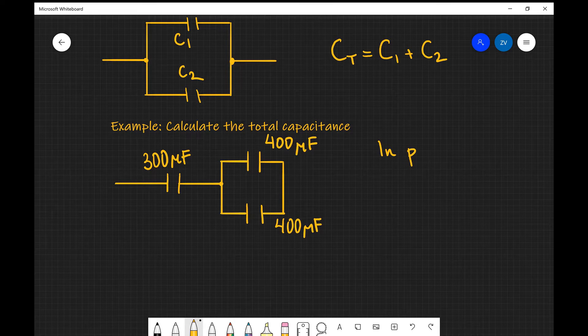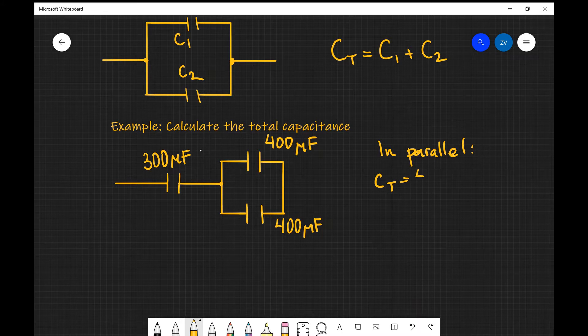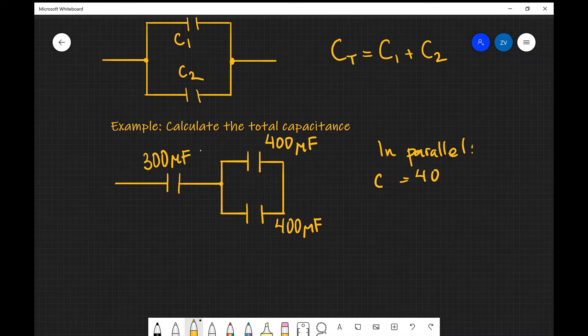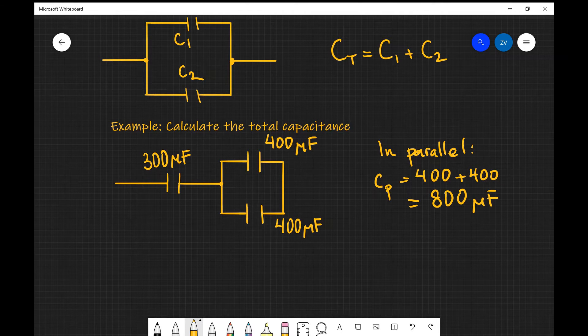So I'm just going to say that in the parallel branch, the total capacitance, we'll call that C parallel, is going to be 400 plus 400, which is going to give us 800 microfarads.